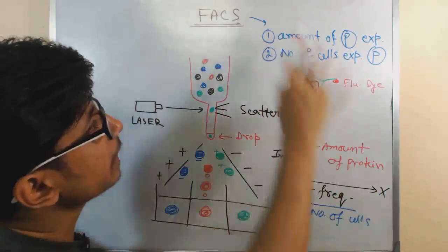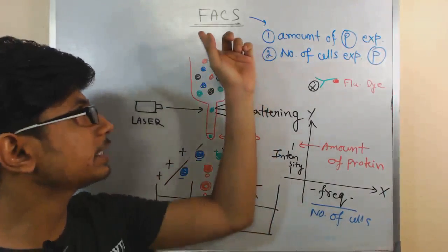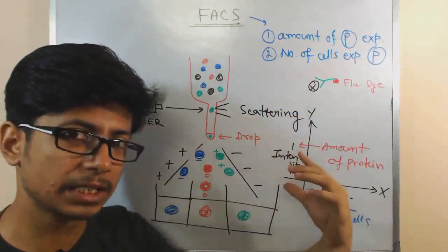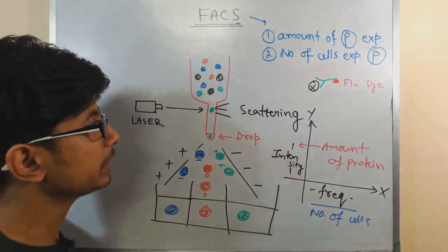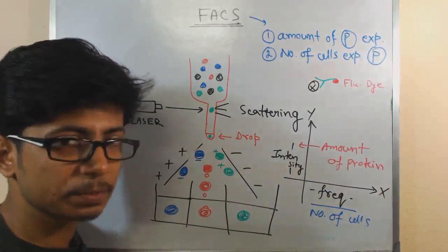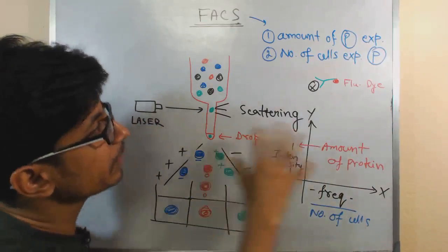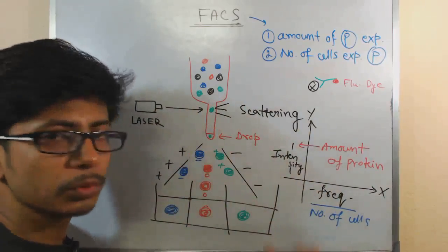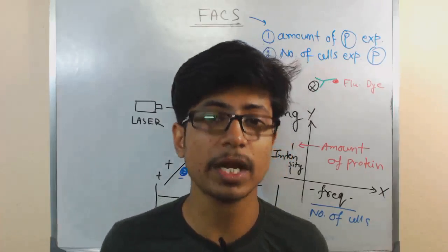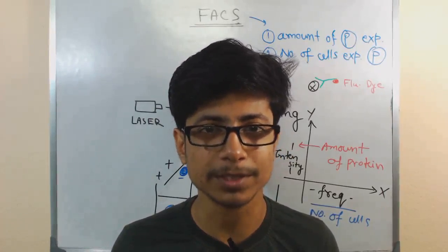This is how Fluorescent Activated Cell Sorter works. It is called Fluorescent Activated because the scattering is important to detect which cells are present, but the fluorescent tag with antibody probe is needed to understand the amount of protein expressed and what type of cells are expressing the protein. That is what we do with FACS. If you like this video, hit the like button, subscribe to the channel to get more video tutorials, and share this video with your friends on social networks. Thank you.